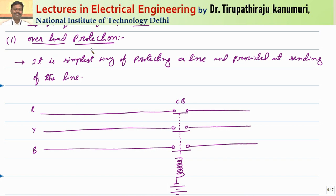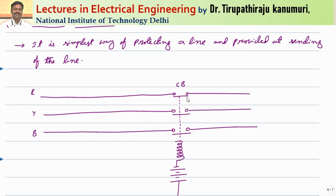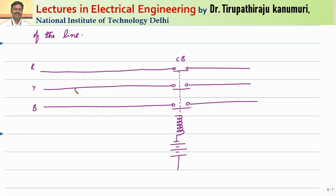Starting with overload protection — the name itself indicates that whenever the load on your transmission line has crossed the limit, then only it should operate, otherwise it should not. This is the simplest way of protecting a transmission line and is generally provided at the sending end. Assuming the transmission line with sending end represented by R, Y, B, a circuit breaker is provided at the sending end, and CTs are connected — each phase will have one CT.